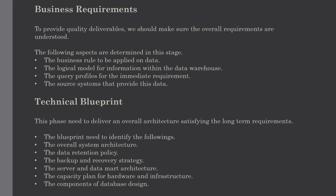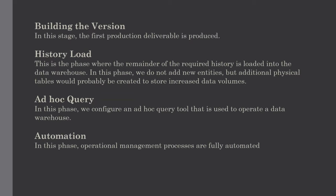The next phase is the technical blueprint. In this stage our data warehouse will start to take shape. This phase needs to deliver an overall architecture satisfying the long-term requirements, and also deliver the components that must be implemented in the short term to derive business benefit. The blueprint needs to identify the overall system architecture, data retention policies, backup and recovery strategies, server and data mart architecture, capacity plan for hardware and infrastructure, and the components of the database design.